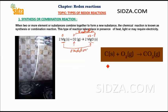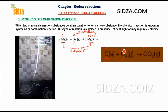Another example is when carbon reacts with oxygen forming carbon dioxide. It is again a combination or synthesis reaction. The oxidation number of carbon changes from zero to plus four, and oxygen from zero to minus two. So carbon undergoes oxidation and oxygen undergoes reduction. This is both a redox reaction and a combination reaction.